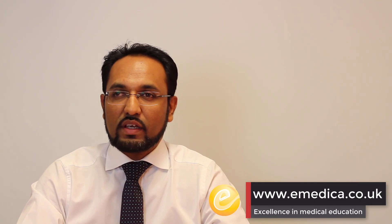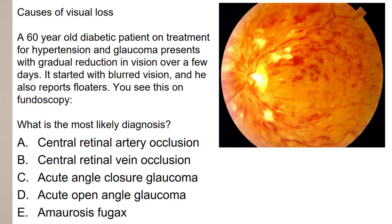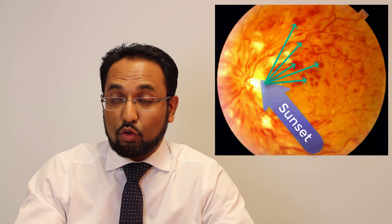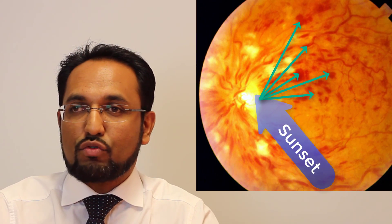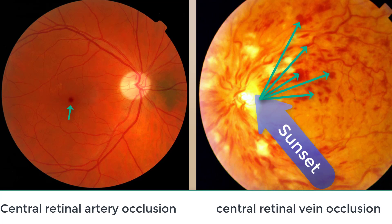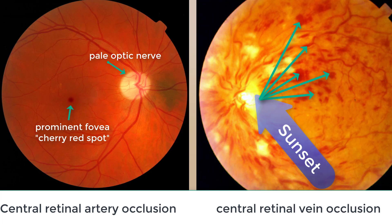The correct answer here is B — this is central retinal vein occlusion. The big giveaways in a picture question: do look at the picture as well as reading the case. Typically, central retinal venous occlusion is described as a stormy sunset. You can see it looks like the sun setting, with tracking back affecting other veins, giving it that stormy clouds appearance. This is very different to central retinal artery occlusion, where we typically get one single cherry red spot.